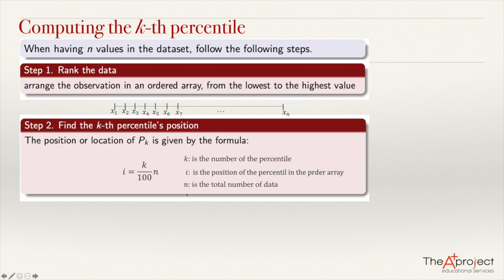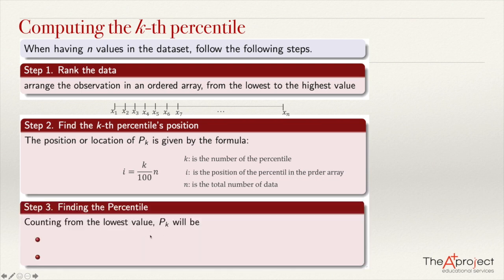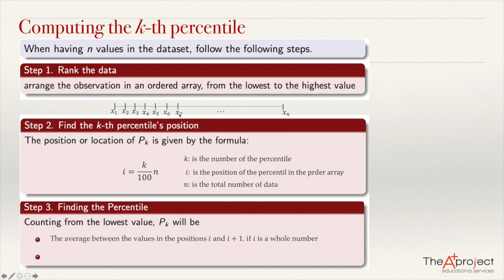After computing the index, there are two possible situations. One possibility is that you get a whole number — for example, you divide by 100 and multiply by n and get 3. In that case, you get the average between the data in position i and the data in position i plus 1. So if i equals 7, you get the average between the data in position 7 and position 8.